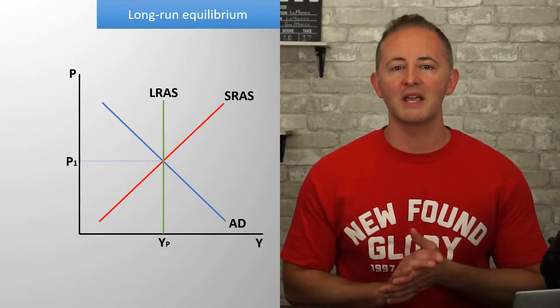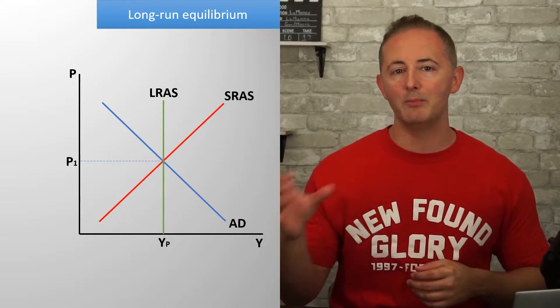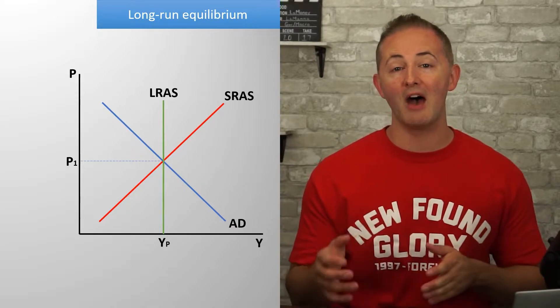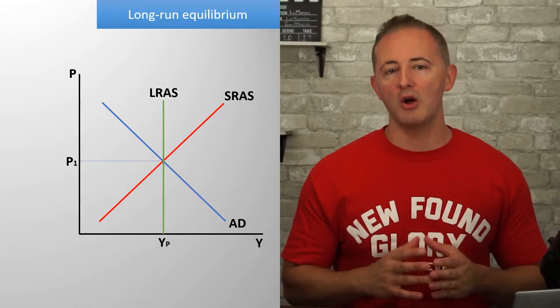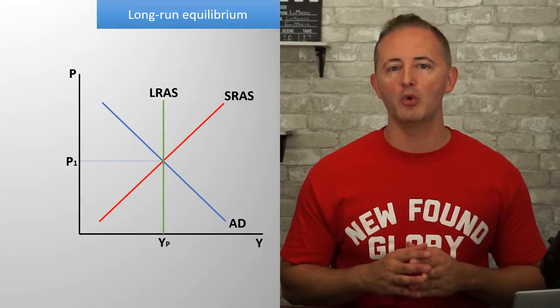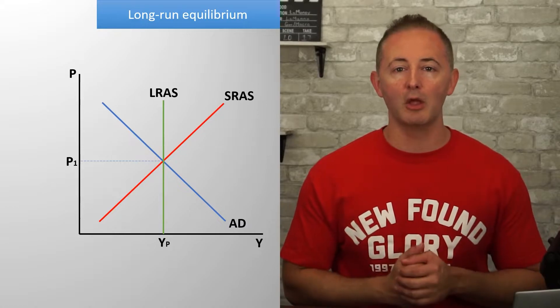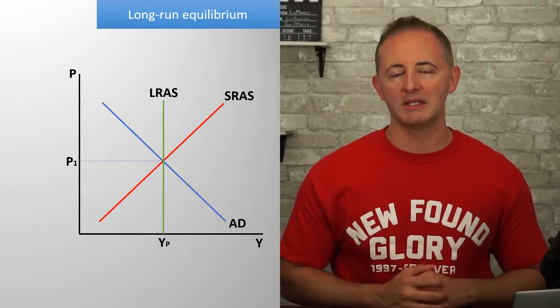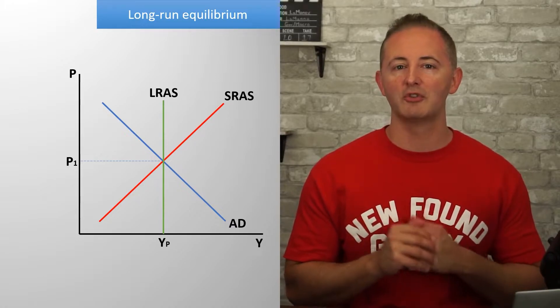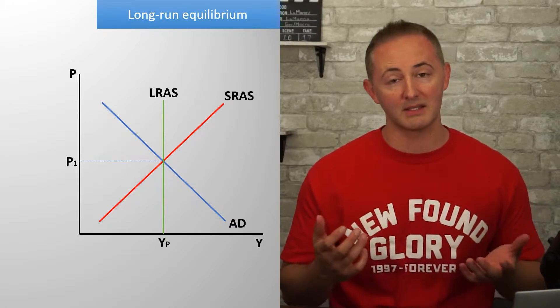On the horizontal axis, we label the LRAS YP for potential output or YF for full employment output. Since this is the full employment level of output, we can also say that at this level of output, we are at the natural rate of unemployment, so there's no cyclical unemployment. There are two other places on the ADAS model where we can have short-run equilibrium. And let's take a look.